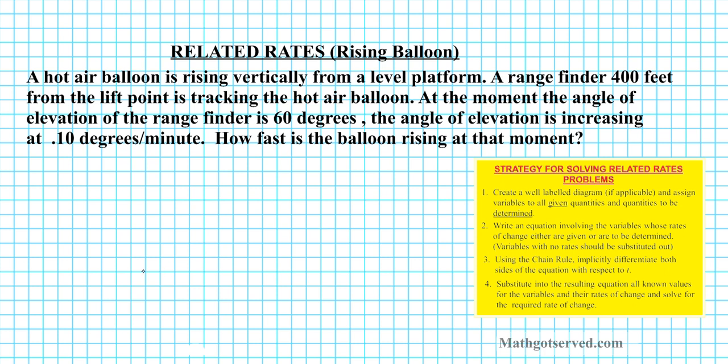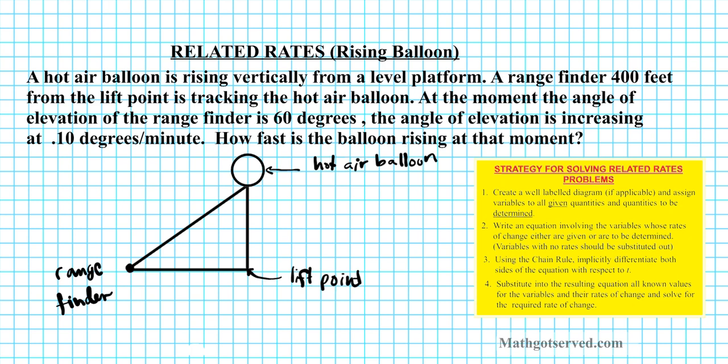At the point up here, we have our hot air balloon. So let's say that's a hot air balloon right here. Let's label that. So this is a hot air balloon. And then at this point, somewhere from the lift point, we have a range finder. Okay? The range finder is right here. And the range finder, this point right here is the lift point. The lift point is 400 feet from the range finder. So this is 400. Okay?